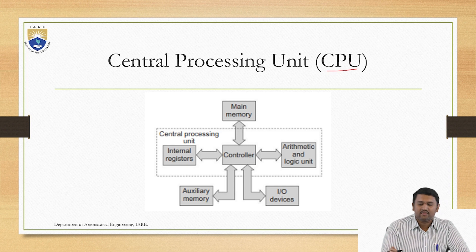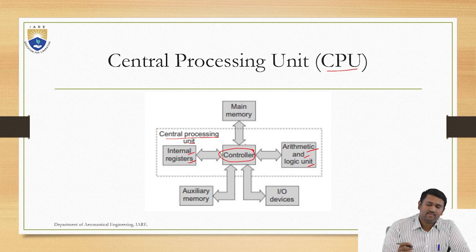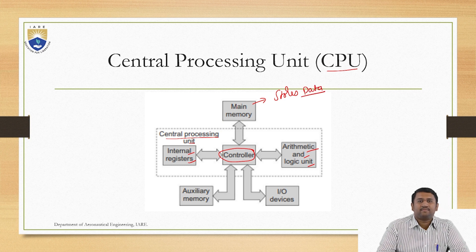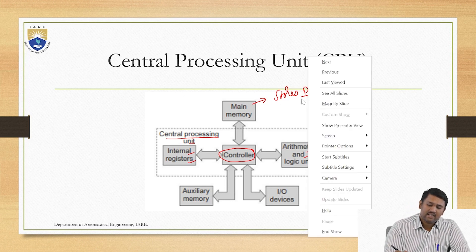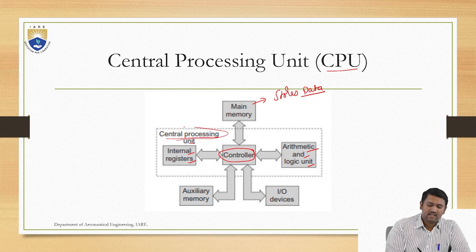A central processing unit consists of your internal registers, controller, as well as arithmetic and logic units. There is a primary controller which controls the data flow to and from your main memory. The main memory stores data. The data will be retrieved or stored, and can be taken back from your controller which is present in your central processing unit.